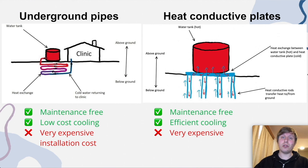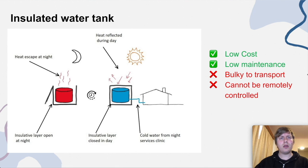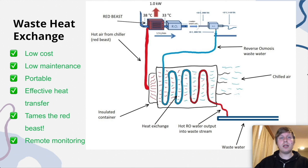We thought of a more permanent fixture solution, like a ground-coupled heat exchanger pumping the water underground, or sitting the tank on a heat-conductive plate to take advantage of underground temperature stability. While solving the maintenance issues, these solutions had a huge cost of installation and were too bulky for the client's needs. A middle-ground solution involved insulating the water tank, opening the insulation to cool overnight and closing it during the day to prevent the water temperature climbing due to ambient temperature — more cost effective and requiring little active maintenance, though bulky to transport with limited telemetry options. Lastly, we had a solution to tame the Red Beast: designing a heat exchange system that connects to the heated air exhaust from the Red Beast and passes over the wastewater from the reverse osmosis, creating an elegantly low-cost, maintenance-free solution satisfying both constraints and objectives, while utilizing infrastructure already in place.